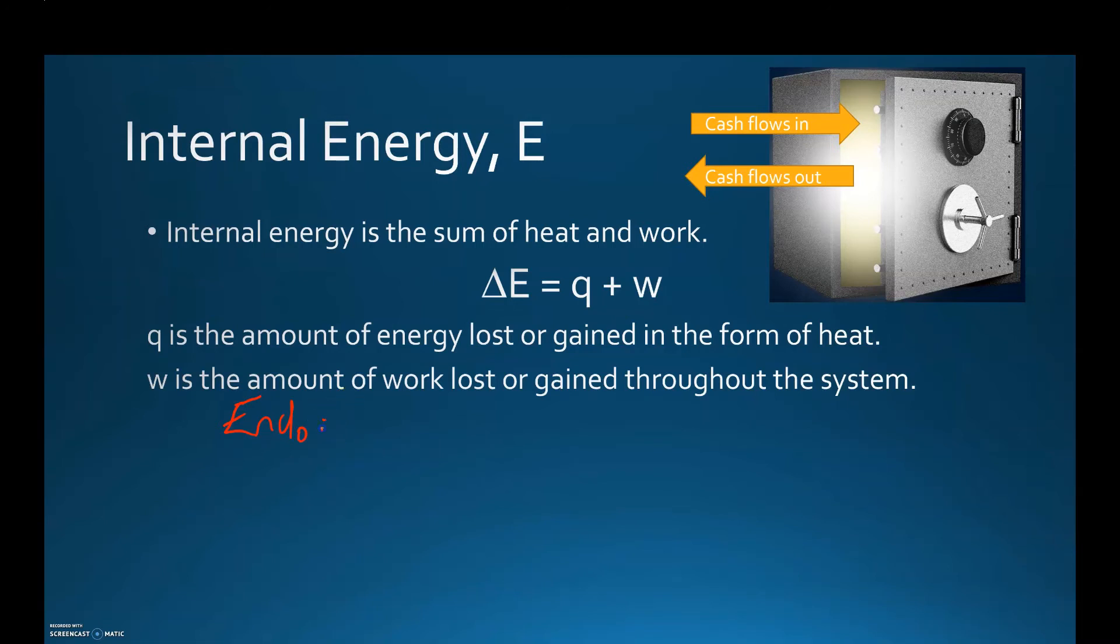Exo, since it's releasing, is going to have a negative value for q. So that's another detail that's important here - you have to understand the sign convention in relation to endothermic and exothermic processes. Endothermic is positive, exothermic is negative. Now what do we talk about w? Well, w is the amount of work.